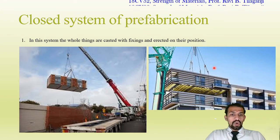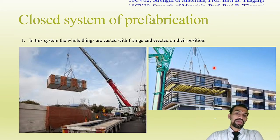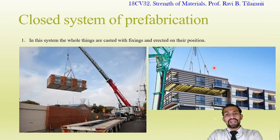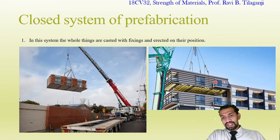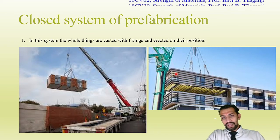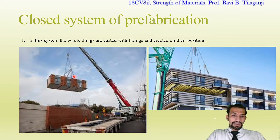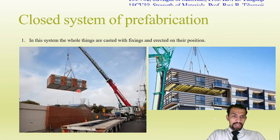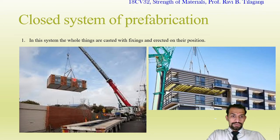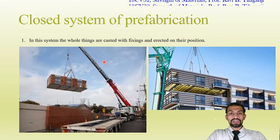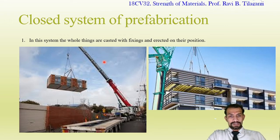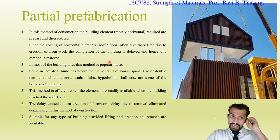Closed system of prefabrication: the whole building is shifted from one place to another. In the figures, a complete building is shown being lifted — including the railing, balcony, and roof. Another figure shows the whole building being placed, with bottom flooring and upper roof all intact. This type is called closed fabrication.